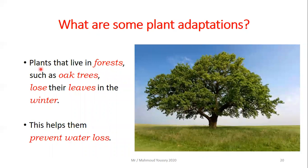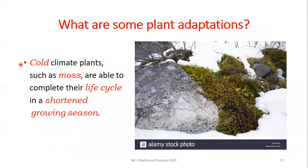Other plants that live in forests, such as the oak tree, lose their leaves in winter to prevent water loss. Plants that live in colder climates like moss are able to complete their entire life cycle in a shortened growing season in order to survive.